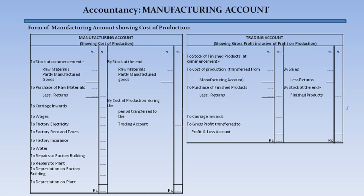On the trading account debit side: cost of finished products at commencement, cost of production transferred from manufacturing account, purchases of finished products less returns, carriage inwards, and gross profit transferred to profit and loss account. On the credit side: sales less returns and stock at end of finished products. This is how the manufacturing account showing cost of production works — all costs are included in the cost of production during the period, which is then transferred to the trading account.